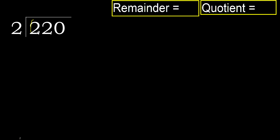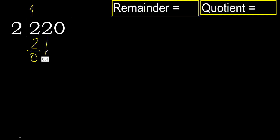4 is greater. 2 multiplied by 1 is 2, which is not greater. Ok, subtract 0. Next, eliminate 0 on this side.